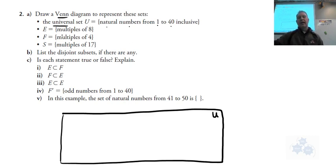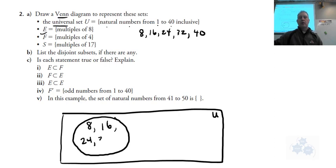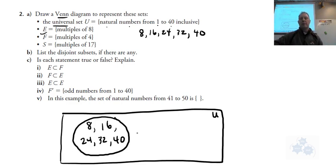So E is the multiples of 8. When we're talking about multiples, that is 8 times 1, 8 times 2, 8 times 3, and so on, all the way up to 40 inclusive. So these are the numbers that have to go in E. We've got E, F, and S, so we're going to make three circles. I'm going to make one big circle and put those numbers in: 8, 16, 24, 32, and 40. As we build this Venn diagram we may have to shift those numbers around a bit.